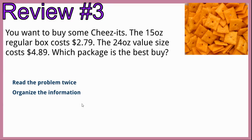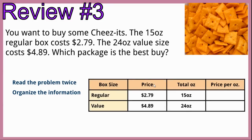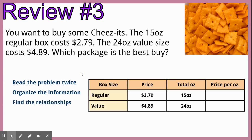Organize the information by drawing a table with box size, price, total ounces, and price per ounce. The regular box is $2.79 for 15 ounces. The value size is $4.89 for 24 ounces. The price divided by the ounces gives us price per ounce. $2.79 divided by 15 ounces is 19 cents per ounce. $4.89 divided by 24 ounces is 20 cents per ounce.